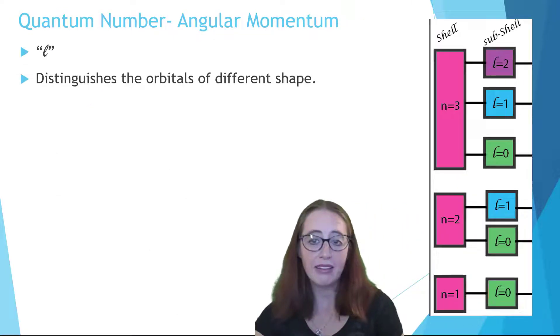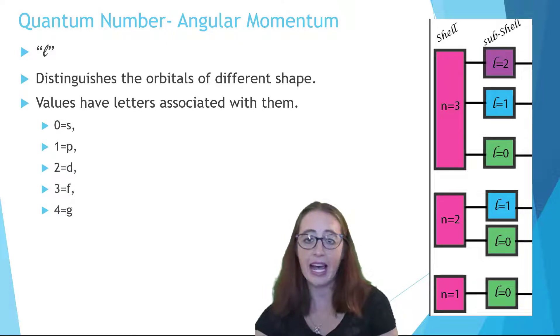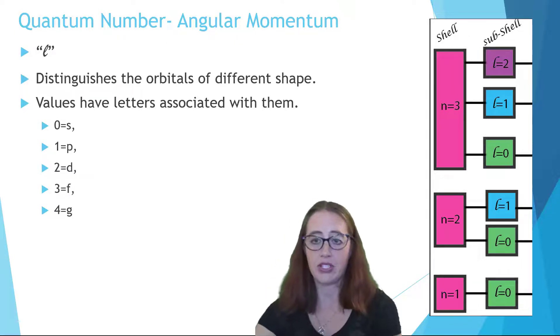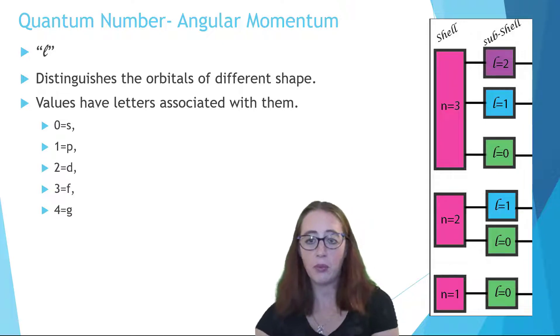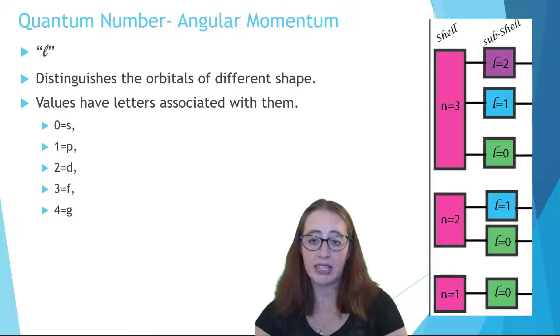The quantum number l is used to designate subshells or orbitals that have different shapes. We've talked about orbitals such as s, p, d, and f, but now we can tie numbers to those. The s is equal to zero, p equal to one, d equal to two, f equal to three, and four is equal to g.